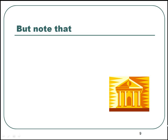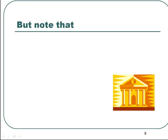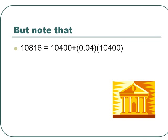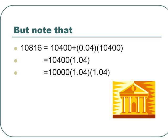We note the pattern again. $10,816 is equal to $10,400 plus 4% of $10,400. This is equal to $10,400 times 1.04. And $10,400 is equal to $10,000 times 1.04. This leads to $10,000 times 1.04 raised to the power 2.